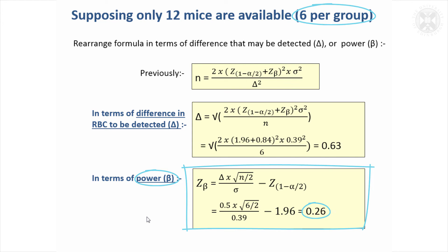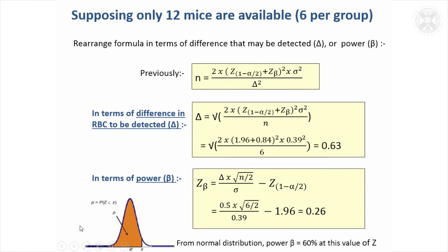It comes out to be 0.26, so that's the value of Z. We'd have to go back to the normal distribution to find out what probability, what power that represented. For that value of Z, 0.26, it's going to be quite a bit lower now. What's the area here? It turns out that the power was 60% for that situation. So if you've only got six mice you would only have 60% power of detecting a difference of 0.5.